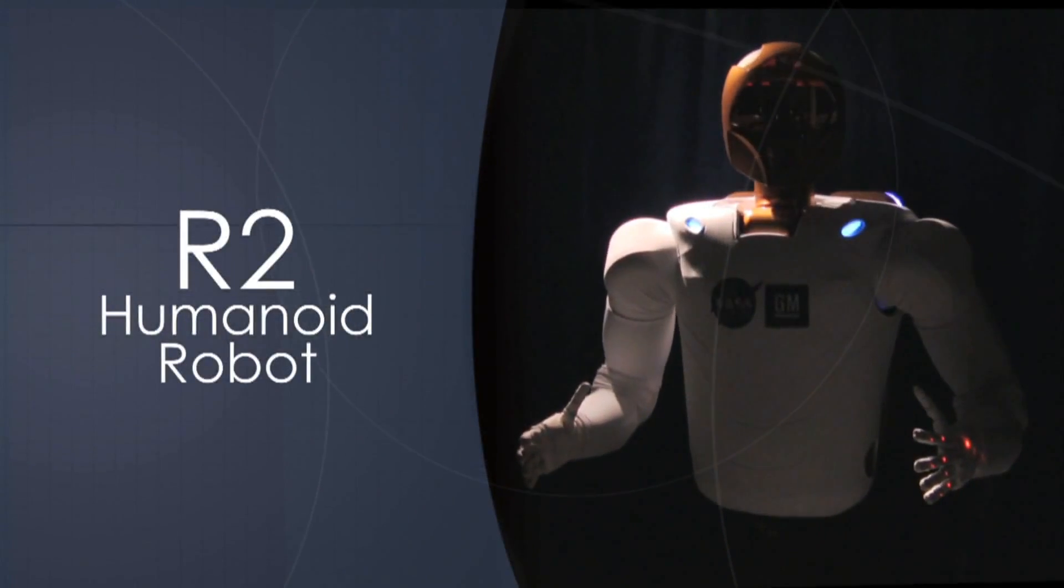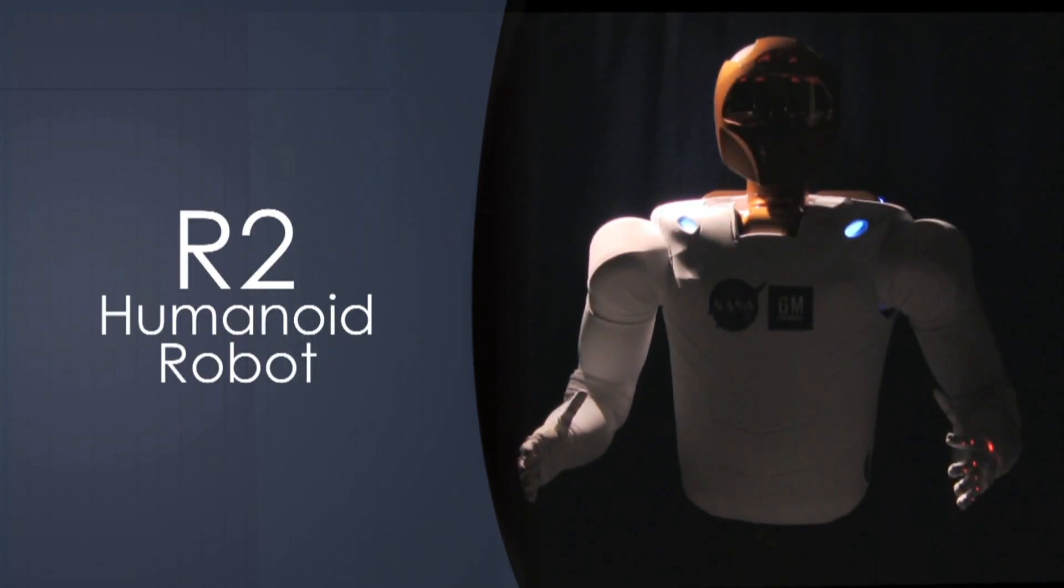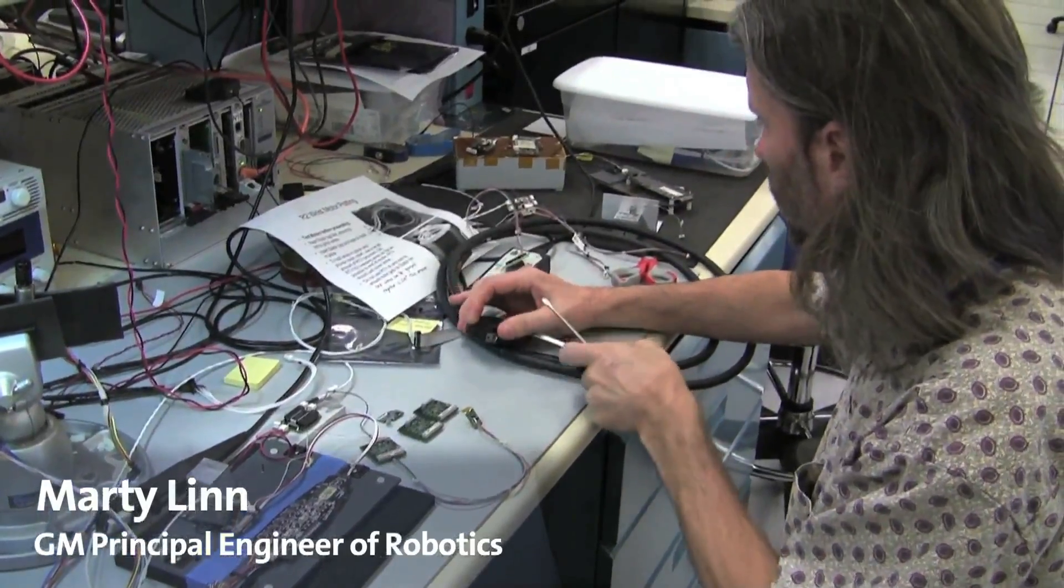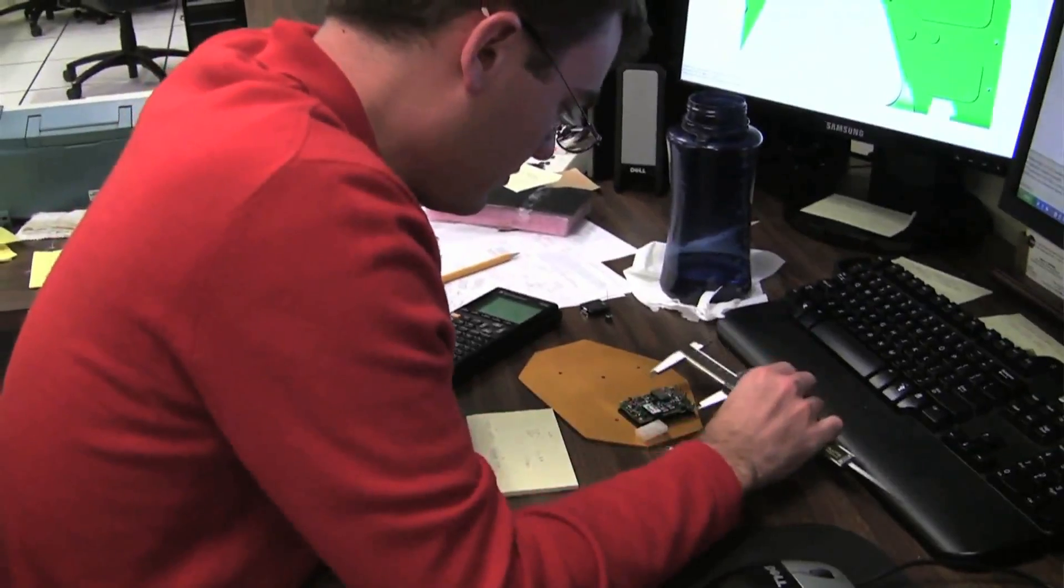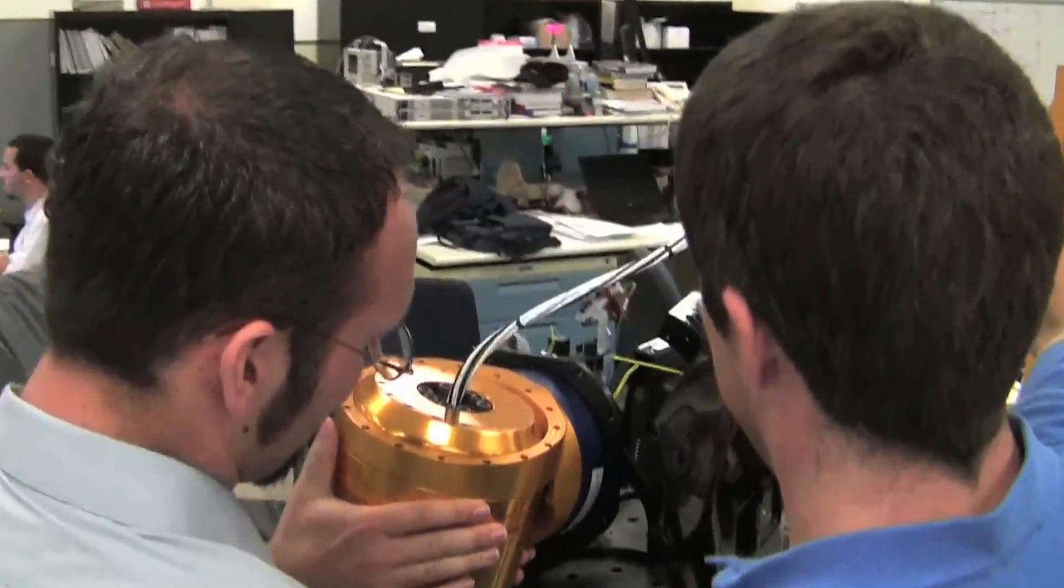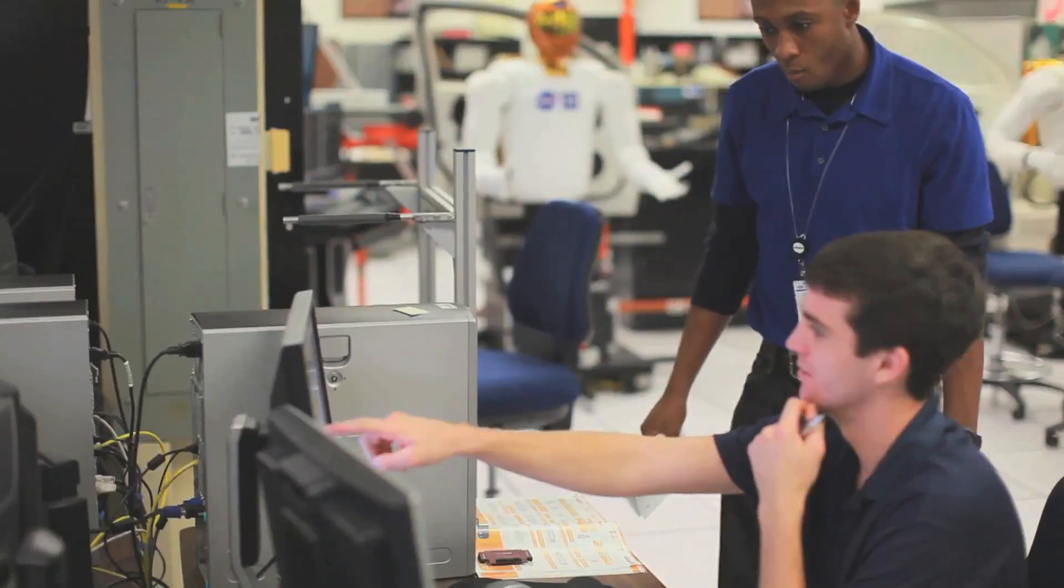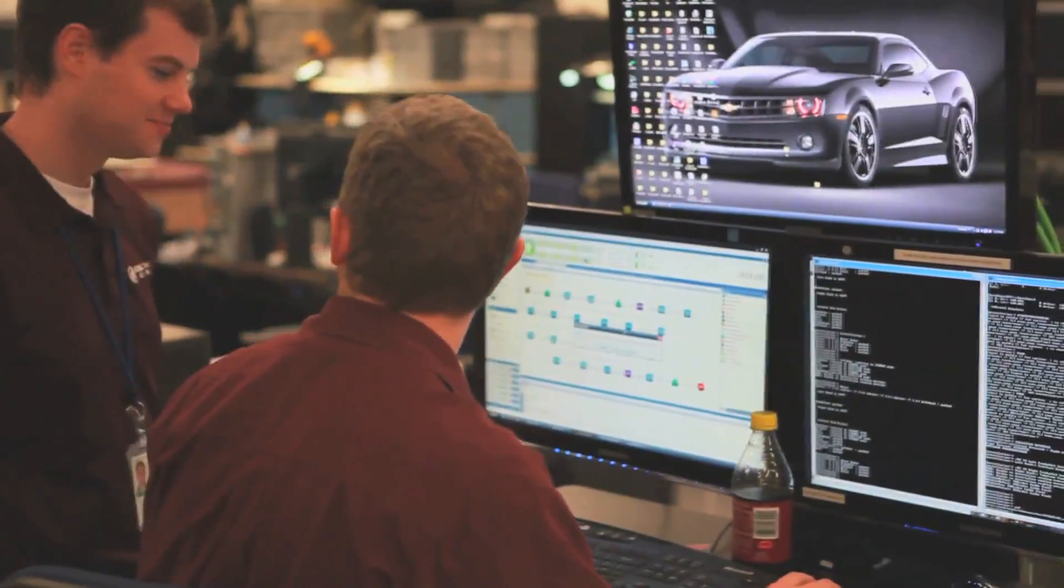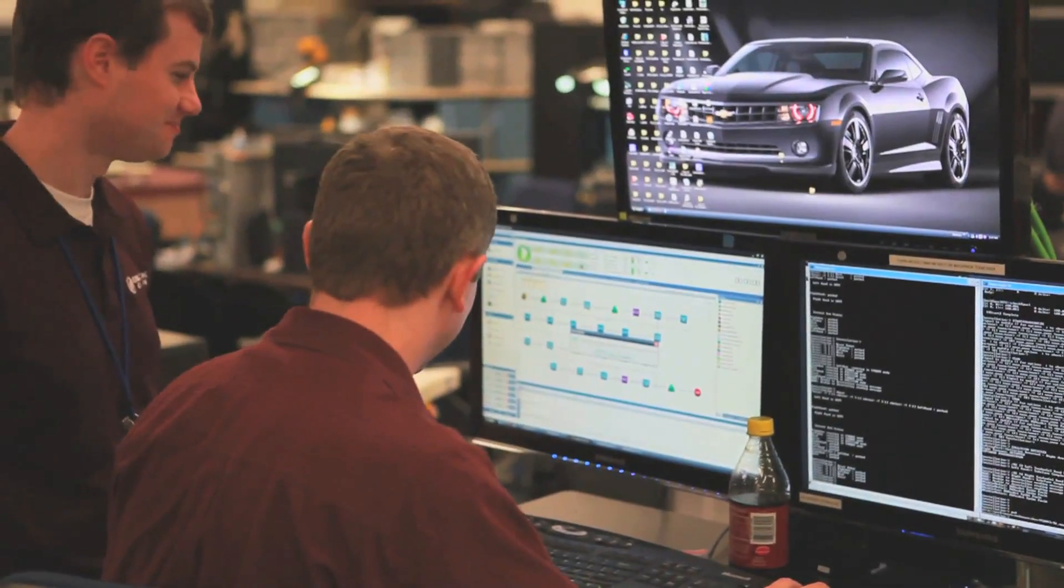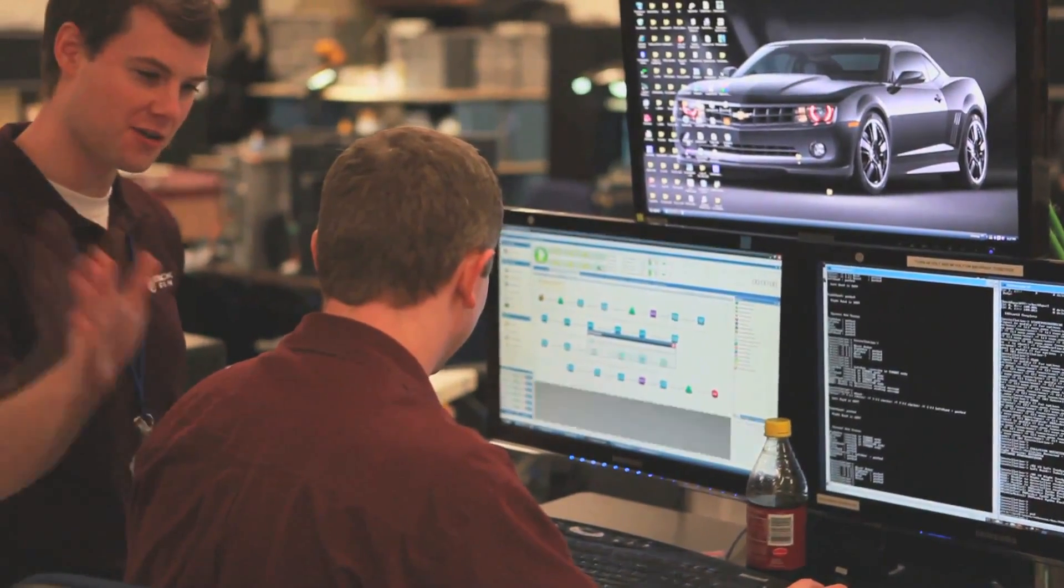The current Robonaut was developed as a result of a partnership between the NASA Johnson Space Center and General Motors. General Motors sent down a team of engineers to work side by side with the NASA engineers developing, assembling, designing and building the current model of Robonaut R2.